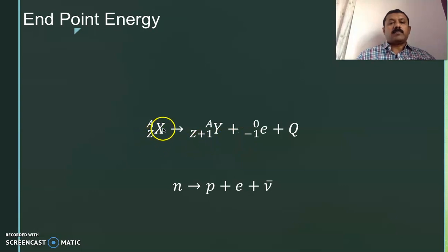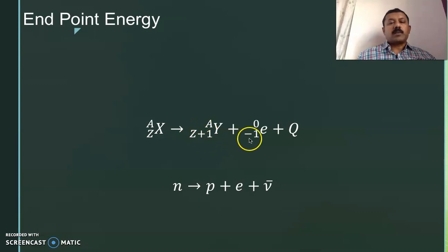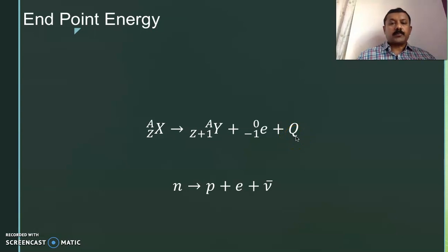In beta decay, there is a parent nucleus X(Z,A) which is radioactive and beta-active. It emits a beta particle (e minus), and we get a daughter nucleus. The mass number remains the same, whereas the charge number increases by 1 unit. This process is generally associated with a large liberation of energy, also called the Q value of the reaction. This is actually referred to as beta minus decay, which takes place in natural radioactivity.